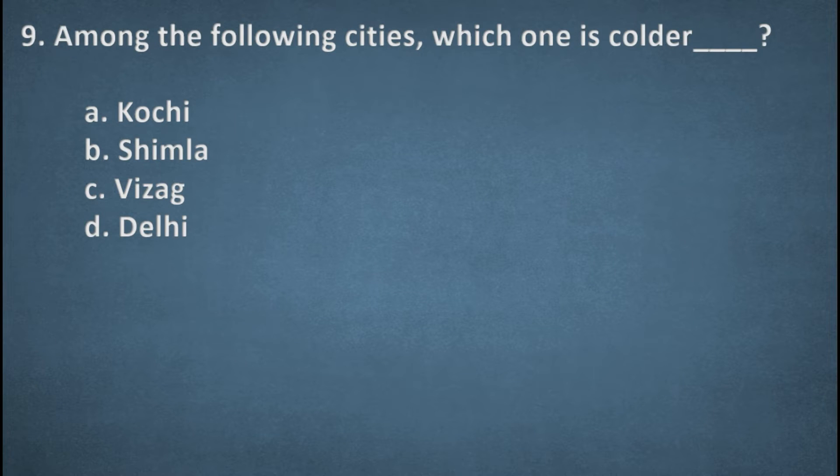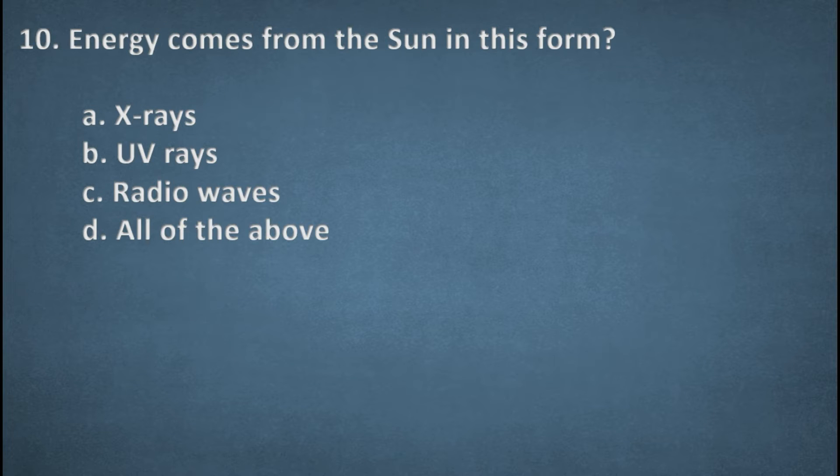Next one. Among the following cities, which one is colder? Options: Kochi, Shimla, Visag, Delhi. The right option, Shimla. Next one. Energy comes from the sun in this form. Options: X-rays, UV rays, Radio waves, All of the above. The right option, All of the above.